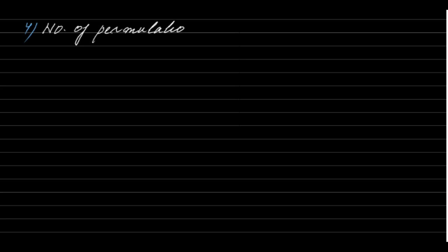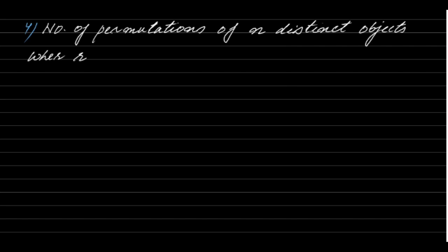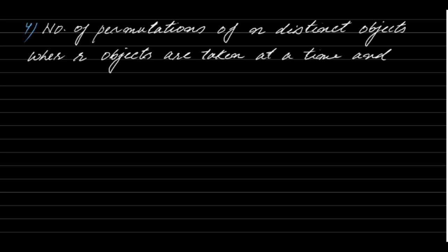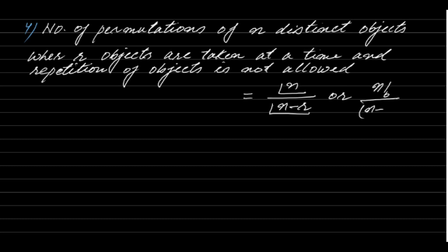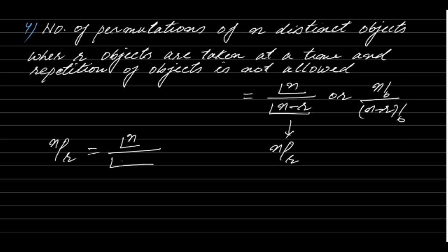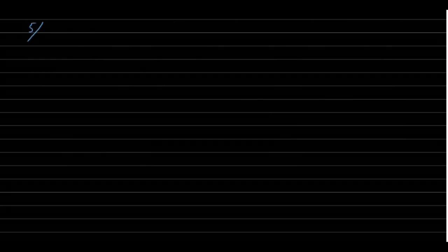Case 4: The number of permutations of N distinct objects when R objects are taken at a time and repetition is not allowed equals factorial N upon factorial (N minus R), denoted as NPR. So remember: NPR = N! / (N−R)!